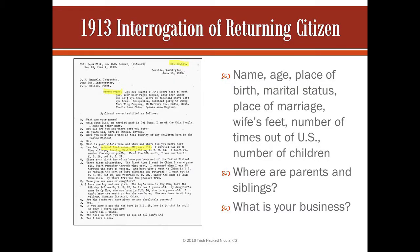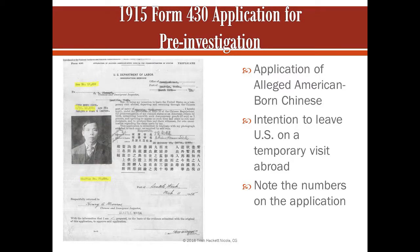He left the country five times — his file covers five different times — and he had to go through the questioning every time he came back. The paperwork tells the same information: name, age, place of birth, marital status. It has the status of his wife's feet if they were bound or natural, the number of times he was out of the United States, and the number of children. They wanted to make sure the children's ages coincided with the times he was in China. They also asked about parents, siblings, and his business.